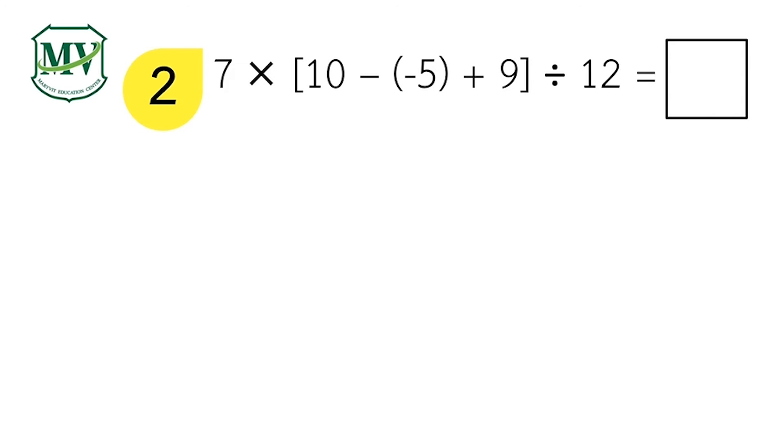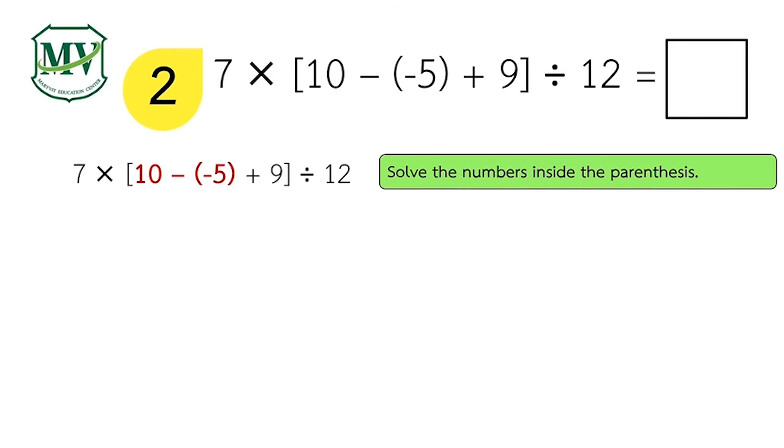In this problem, we have to follow the PEMDAS rule. First, simplify the operations inside the parenthesis. 10 minus negative 5. Keep positive 10. Change subtraction to addition. Then change negative 5 to positive 5. So 10 plus 5 equals 15.